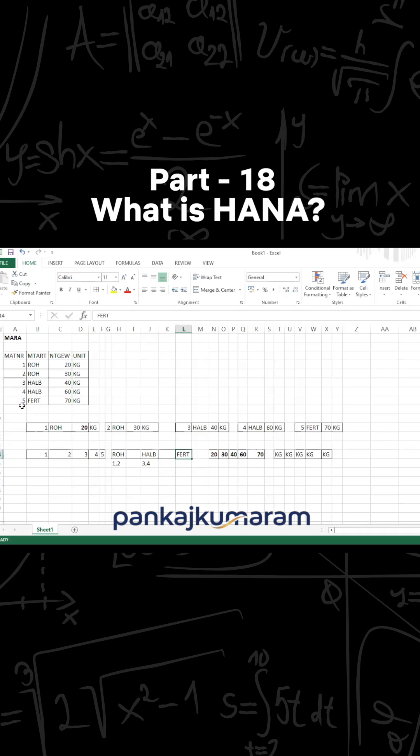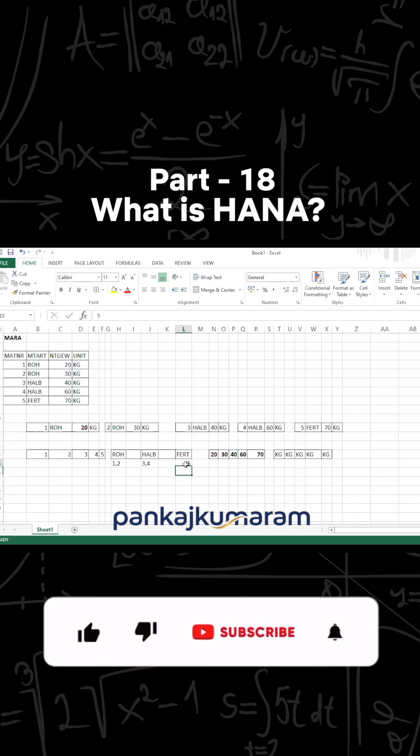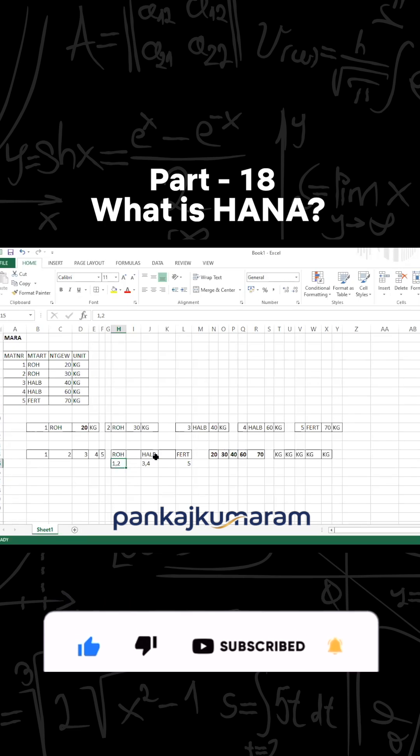And for Halb because two times Halb is there, you can delete it. It is there at the fifth index. So you can see when you are having a large amount of data and duplicate records are there, how efficiently you will be able to save the storage. You can compress the data using the index table.